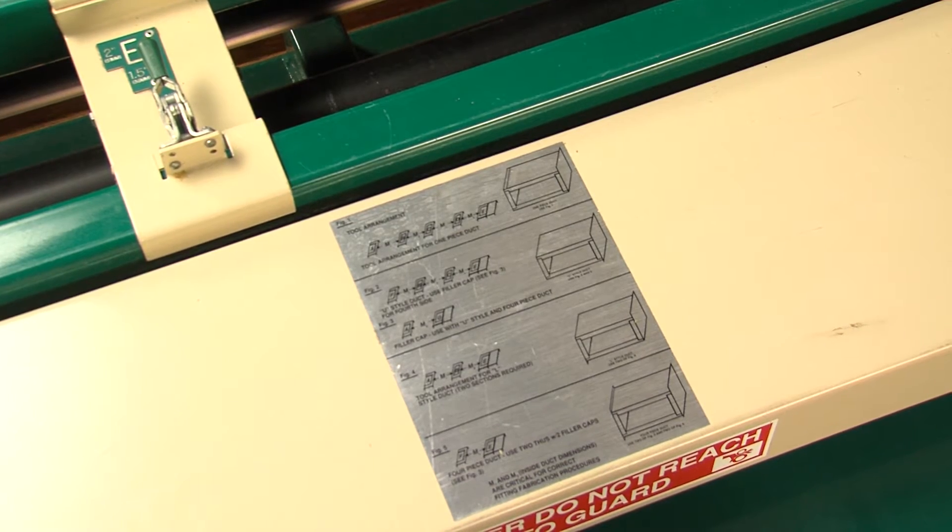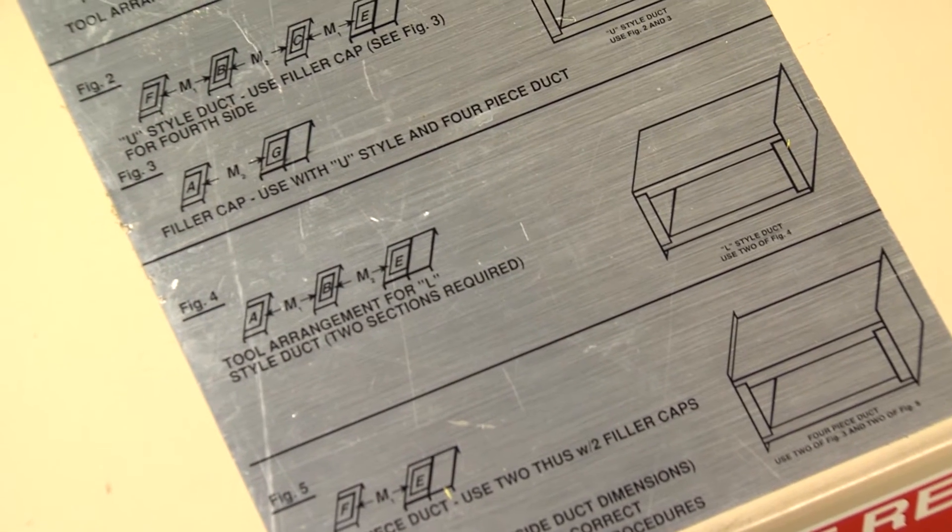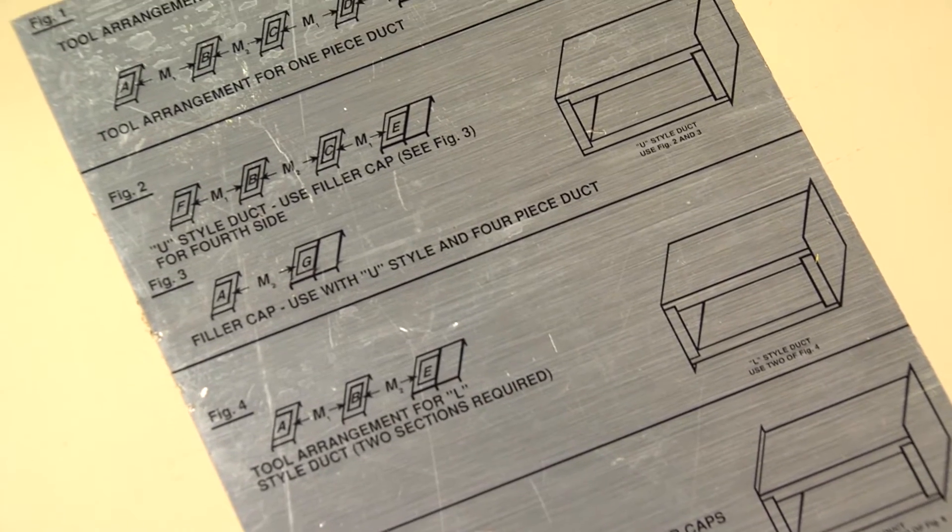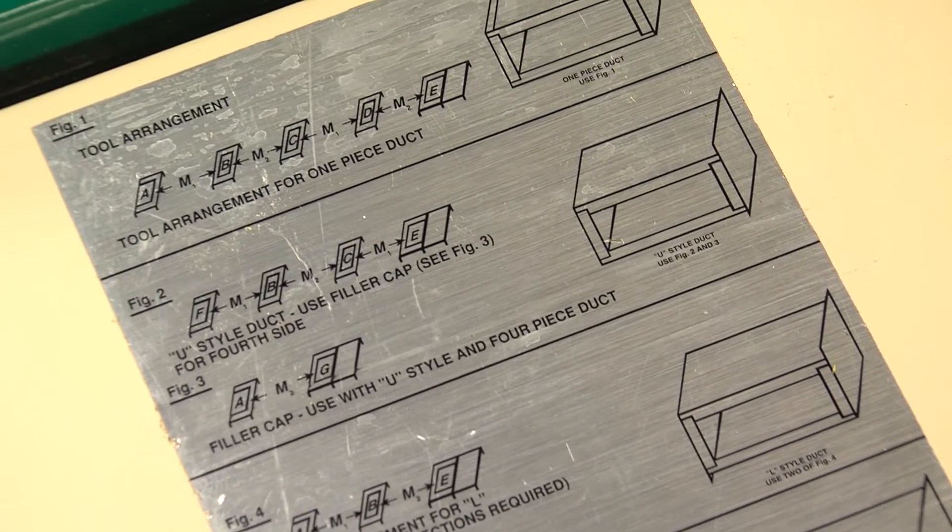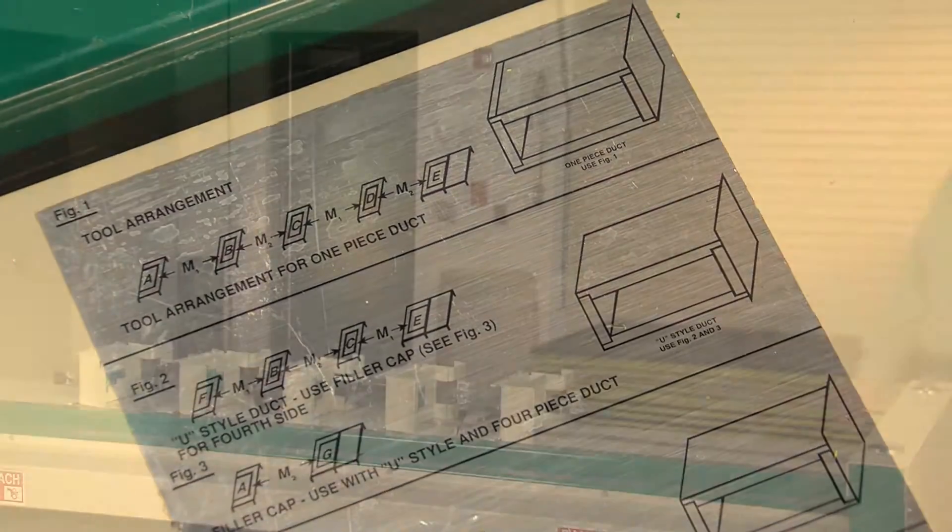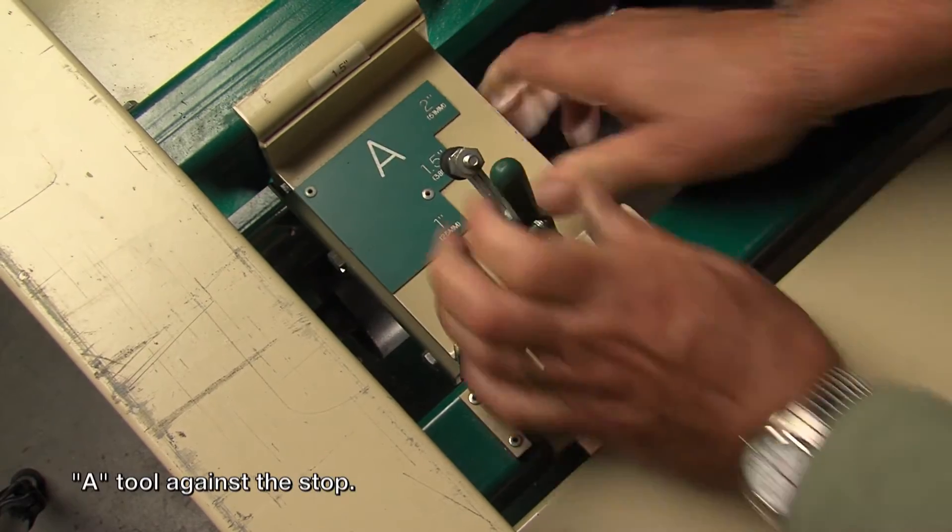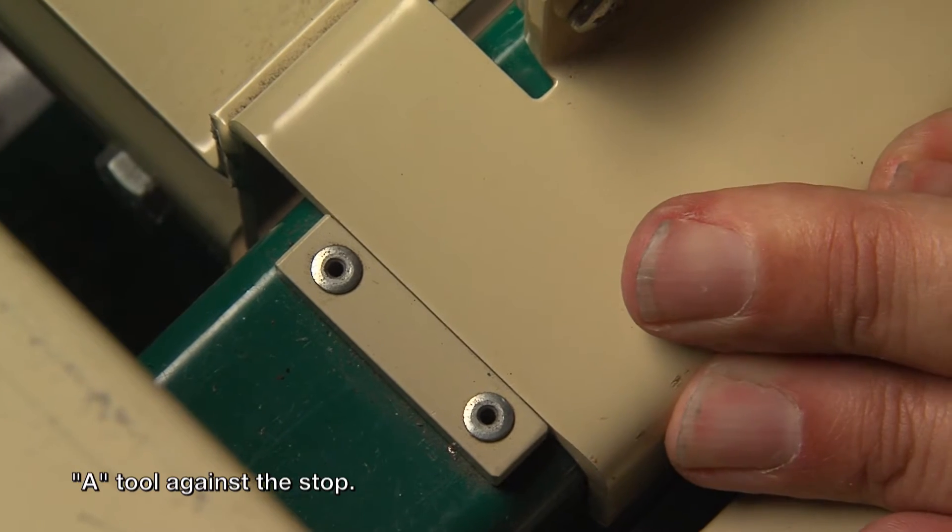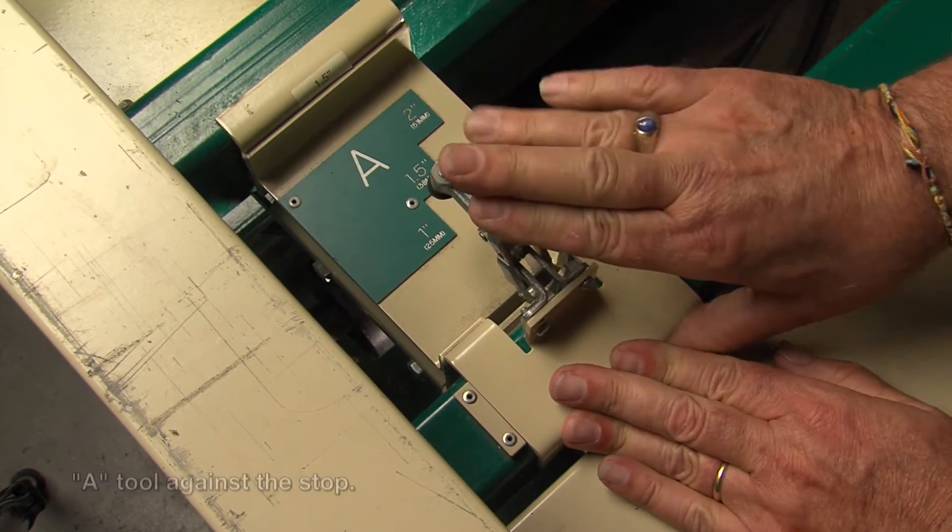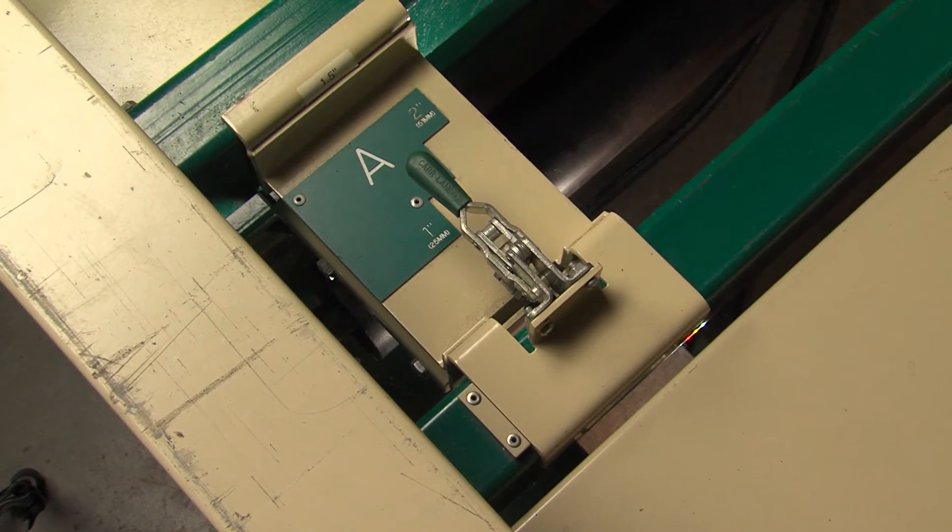The demonstration will focus on grooving a one-piece duct. Looking at the decal, you can quickly see what tools we will be needing and how they will be arranged on the toolbar. Start by placing the A tool on the toolbar tight against the stump. Push the tool holder back on the toolbar and carefully press the clamping bar down to lock the tool in place.